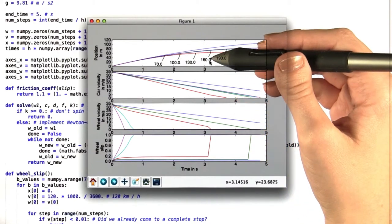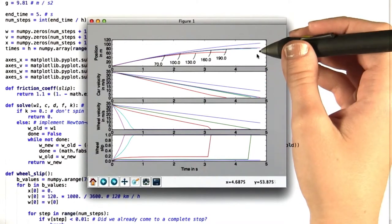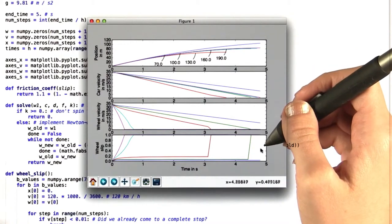160 the cyan line, and 190 the magenta line. So we can see then how different braking accelerations affect these four different quantities.